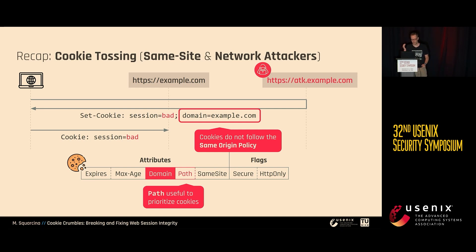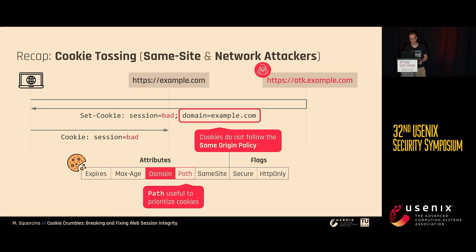There is also the path attribute, which is interesting for mounting cookie tossing attacks because it can be used to prioritize cookies depending on the value of the path itself.